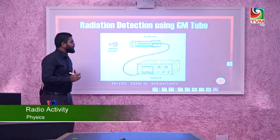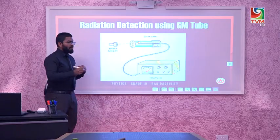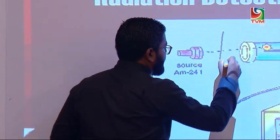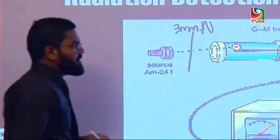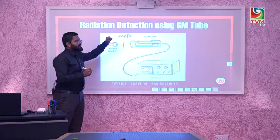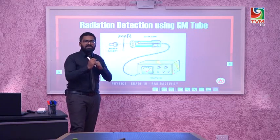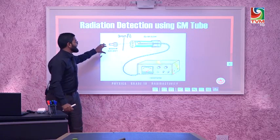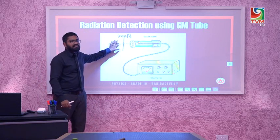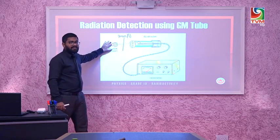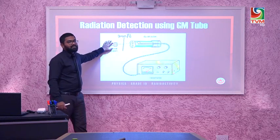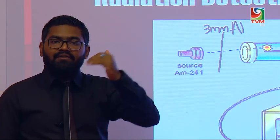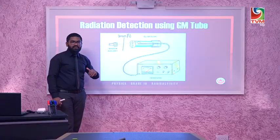If we want to check for beta particles, we replace the paper with a 3-millimeter aluminum sheet. This aluminum sheet will stop all beta particles and also all alpha particles. If the source is emitting beta particles, the rate meter will show a reduced value after the aluminum sheet is placed.